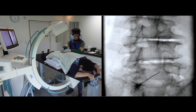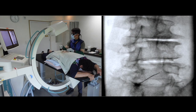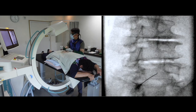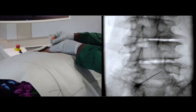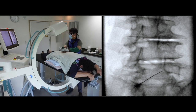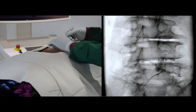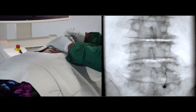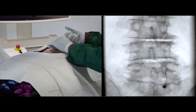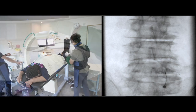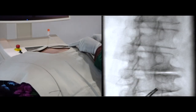Let me turn to the ipsilateral oblique C-arm view. Contrast media injection. It is AP view with arthrogram. I will administer a steroid mixture containing botulinum toxin. The next target is the right L3-4 facet joint.